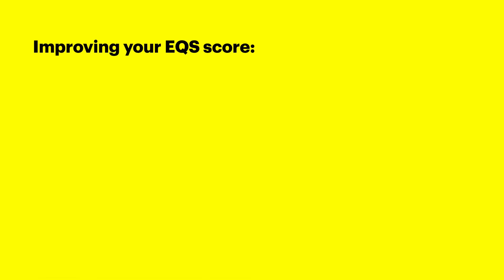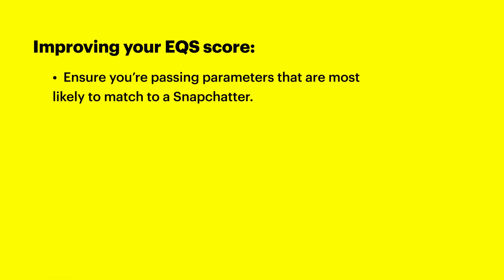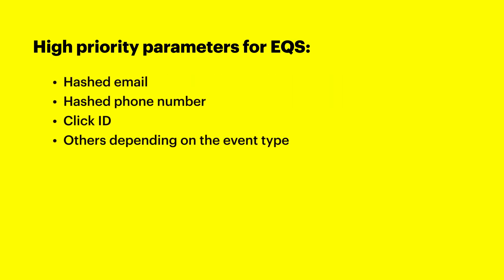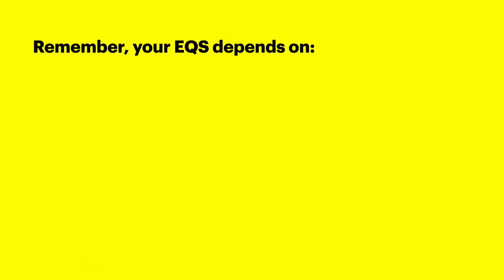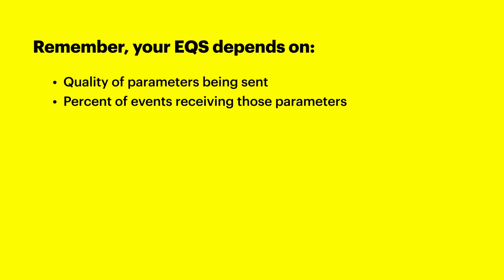The simplest way to improve your EQS score is to ensure that you are passing parameters that are most likely to match to a Snapchatter. Hashed email, hashed phone number, and click ID are some of the highest priority parameters. Refer to the depicted order of priorities and determine what parameters you should prioritize. Remember, every additional parameter increases the chance that your events will match to a Snapchatter. As previously mentioned, the next two components of EQS calculation are the quality of the parameters being sent and the percent of events receiving those parameters.